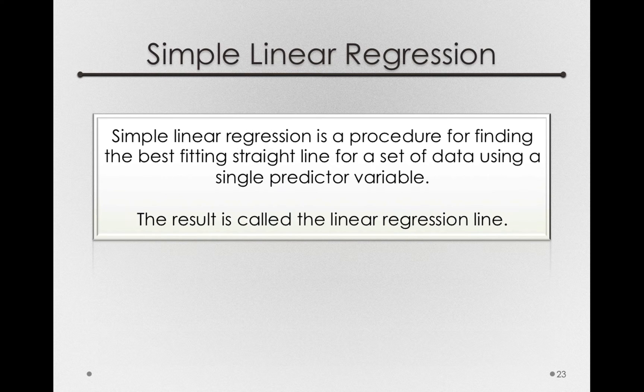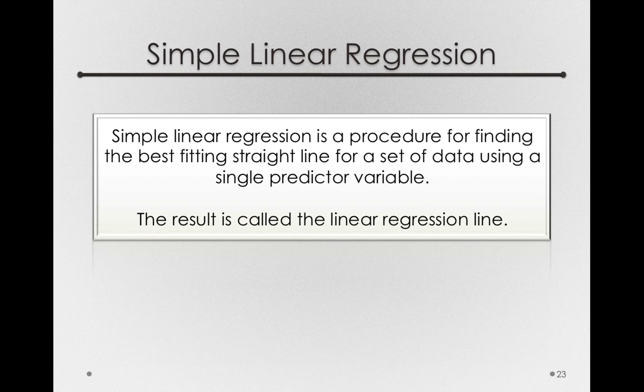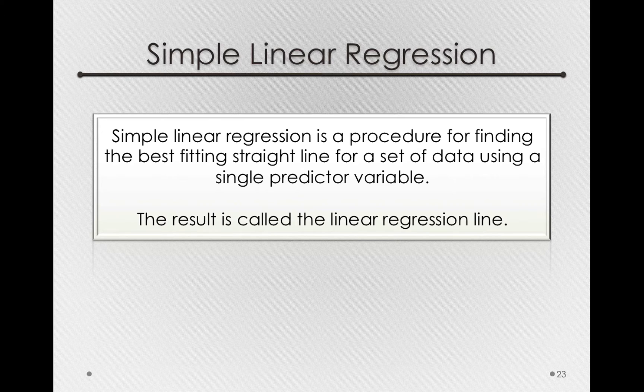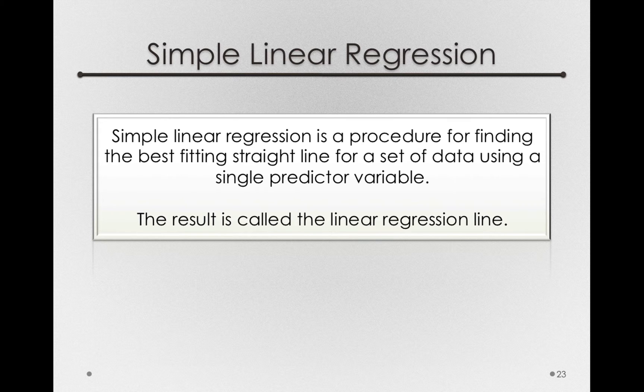What we just did before was an example of simple linear regression. Simple linear regression is a procedure for finding the best fitting straight line for a set of data using a single predictor variable. In our previous example, that was just the number of hours studying. The result is called the linear regression line, a straight line that best fits a set of data.